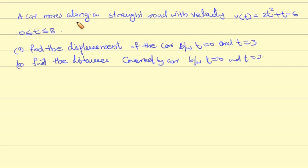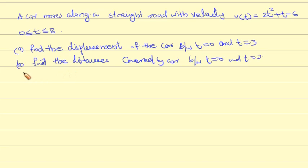Question: A car moves along a straight road with velocity v(t) = 2t² + t - 6, where 0 ≤ t ≤ 8. First question: find the displacement of the car between t = 0 and t = 3. Second question: find the distance covered by the car between t = 0 and t = 3.